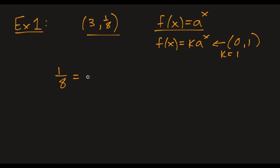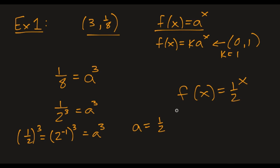1 over 8 is the output of a cubed. So what we want to do is either take cube root or envision this as something to the third power. Well, this is 1 over 2 cubed. So this is 1 half to the third power, or 2 to the negative 1 to the third power. Or I can think of it as 1 half to the third power, whichever one you like. And then a would then be 1 half. So I have the equation 1 half to the x power.